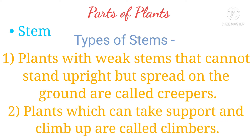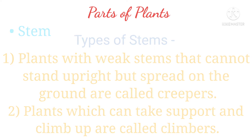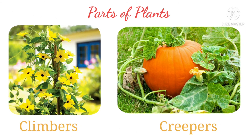Types of stems: plants with weak stems that cannot stand upright but spread on the ground are called creepers. Plants which can take support and climb up are called climbers. This is the picture of climbers and creepers.